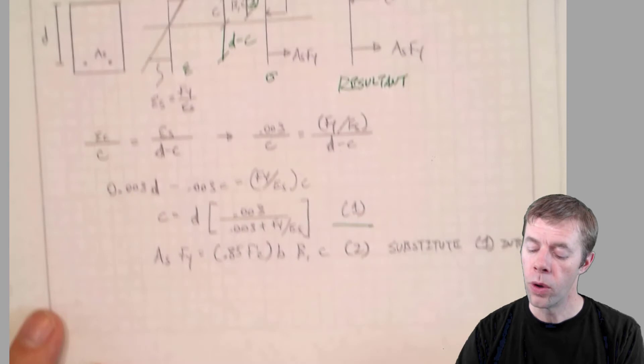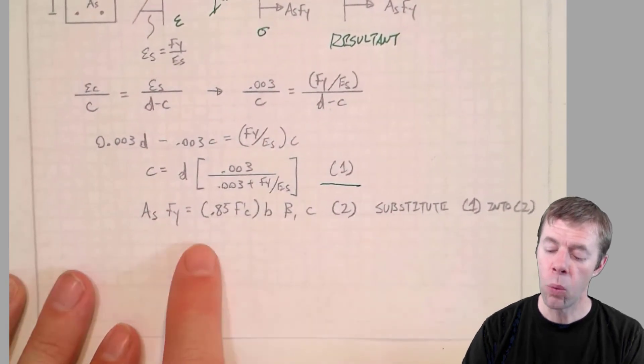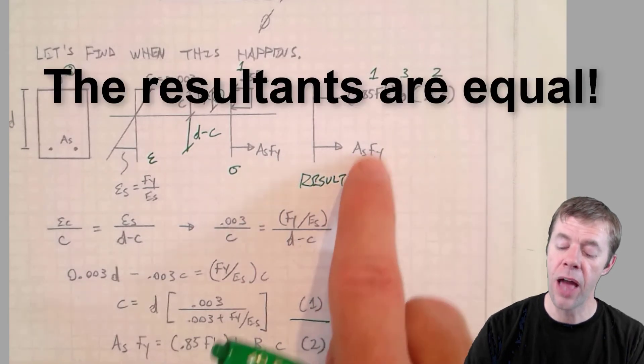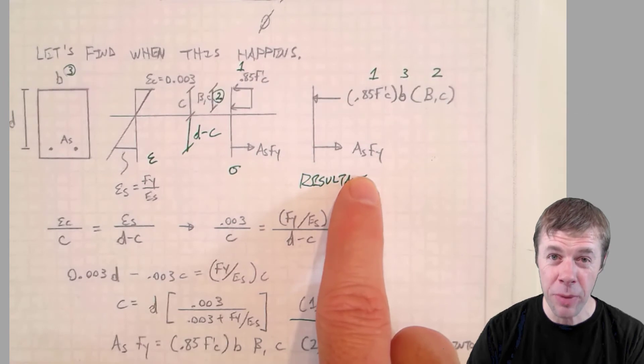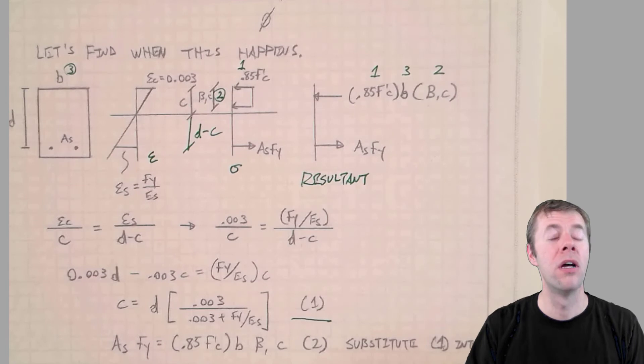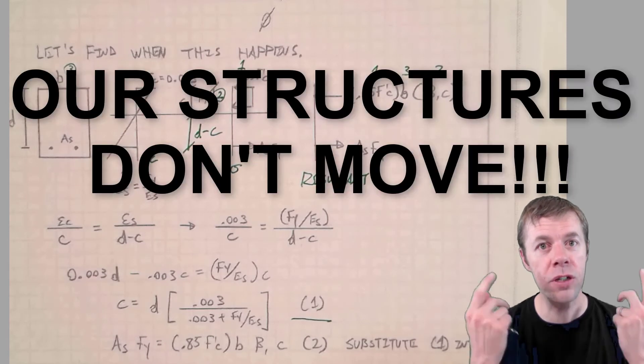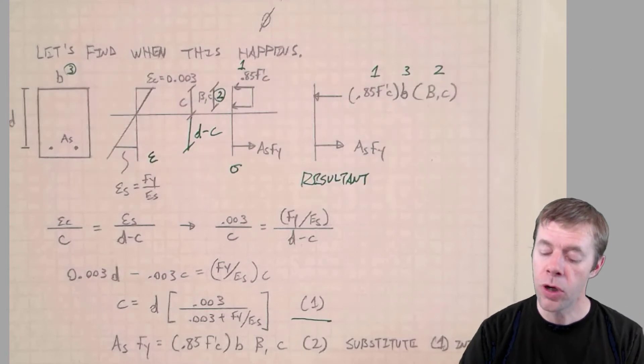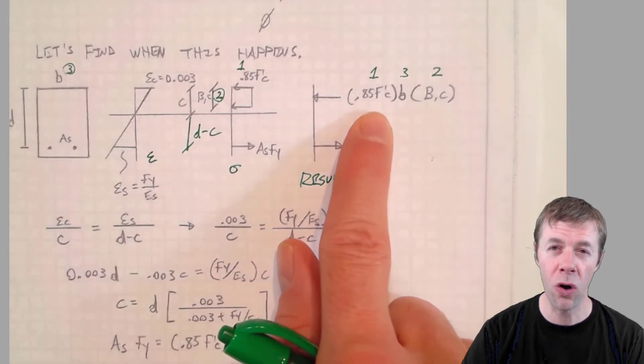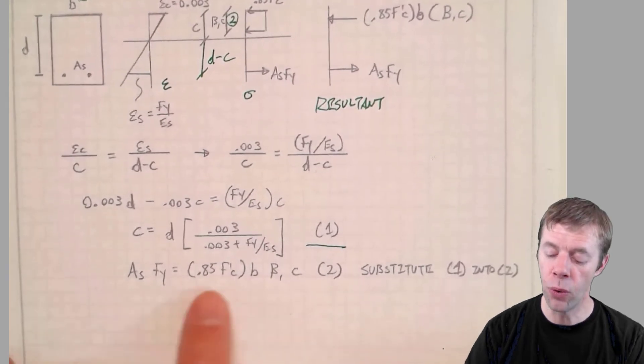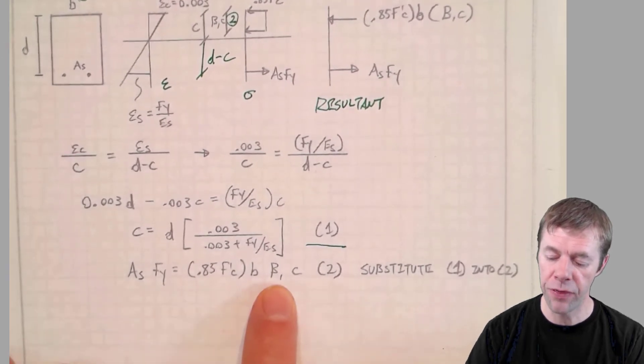Now equation number two down here at the bottom. How did I get that? Well, that comes from these resultants. These have to be equal to one another. Why do they have to be equal? Because the summation of forces in the x direction have to be zero when things aren't moving and we're civil engineers. Our stuff doesn't move. If it moves, it's bad. So we know ASFY has to be equal to all this stuff up there at the top. ASFY has to be equal to all the stuff from the resultant at the top.